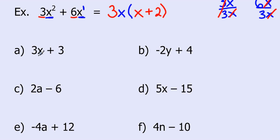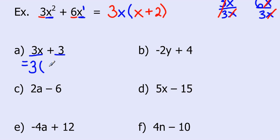Looking at another example: 3x plus 3. I'm going to take out the greatest common factor first. What's common in both terms, 3x and 3? That's 3. Can I take an x out? Well, this one doesn't have an x, so I can't take an x out. What's left over? 3x divided by 3 leaves x, and 3 divided by 3 is just 1. So 3x plus 3 common factored is 3 times (x plus 1).